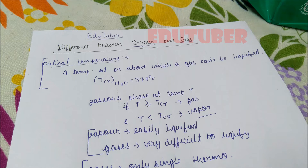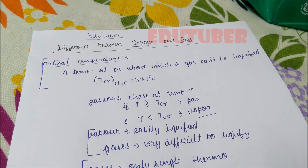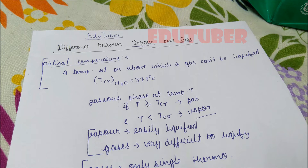Critical temperature says above this temperature you cannot liquefy the gas. If we fix the temperature and the substance is in gaseous phase, how do we liquefy it? The parameter we alter is pressure. Above 100°C and below critical temperature, if we increase the pressure, it is possible to liquefy the substance. So above 100°C a substance is in vapor phase, but at a temperature between 100°C and 374°C, increasing pressure can easily liquefy it.